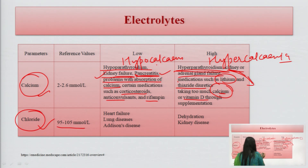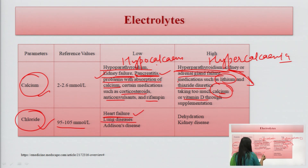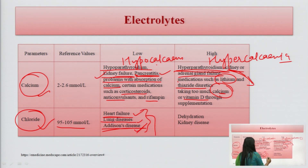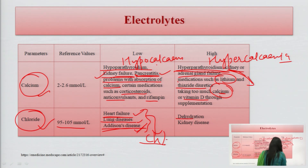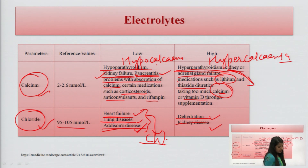For chloride, the conditions are hypochloremia and hyperchloremia. In heart failure, lung disease, or Addison's disease, the chloride level will be lower in the body. In dehydration and kidney disease, it could be associated with higher chloride levels in the blood.